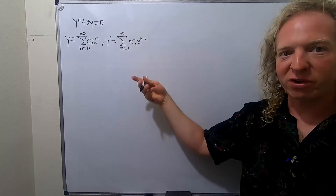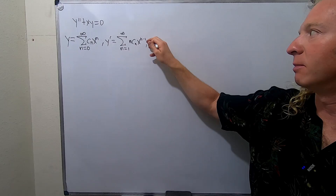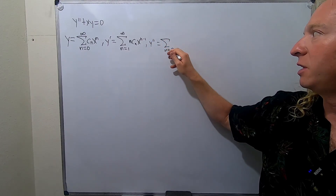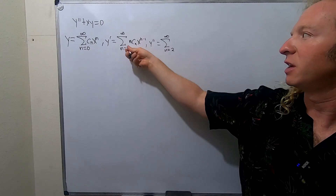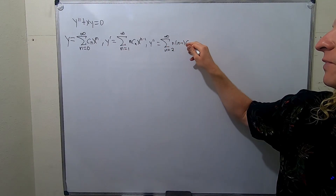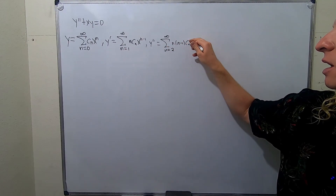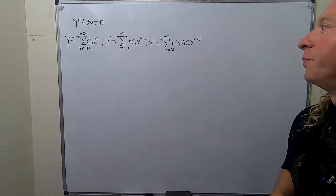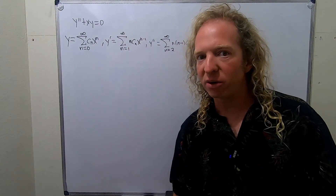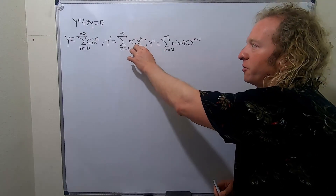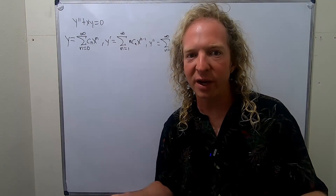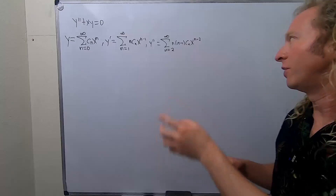Same thing for the second derivative: take the derivative again, shift up again, so y double prime starts at n equals 2 to infinity. Bring down the n−1, so you get n(n−1)·c_n · x^(n−2). Again, if you were to plug in 1 here you would get x⁰, just a constant as your first term. When you differentiate, your first term goes away — that's why you shift up.